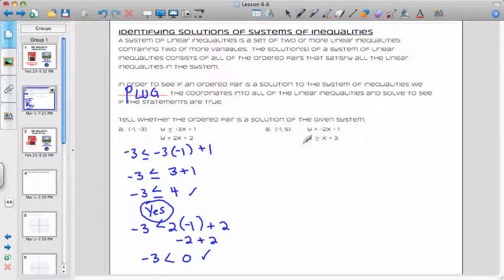With the second example, we have negative 1 and 5 for our coordinates. So I'm going to plug those in and get 5 is less than negative 2 times negative 1 minus 1. And I want to go ahead and do my math. So negative 2 times negative 1 equals 2. 2 minus 1 equals 1. So is 5 less than 1? No.